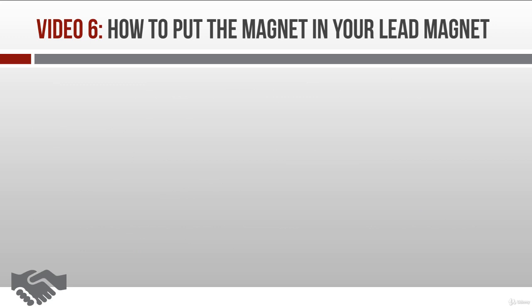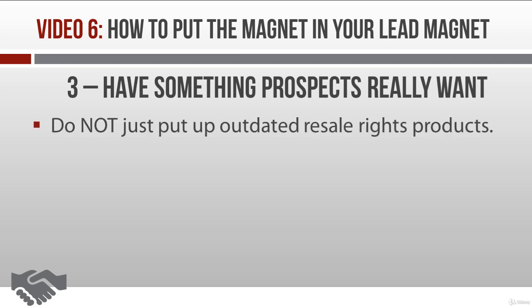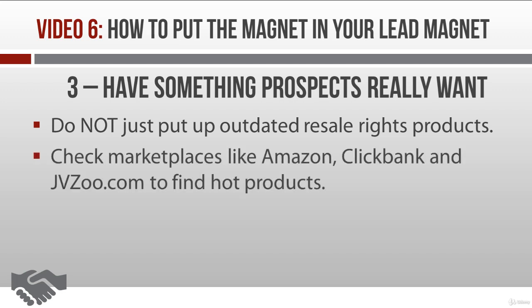The third tip for attracting prospects is to be sure you have something they really want. A lot of people overlook this one too. You can't just toss up some resale right products that your prospects have already seen on a million other websites — it won't work. Then you're no better than that weird old woman we all know who offers everyone those odd hard candies that have been out of production since 1960. Do your market research to find out what people really want. Check out marketplaces like Amazon, ClickBank, and JVZoo to find out what products are hot and selling like crazy.